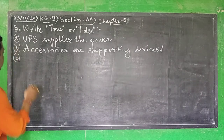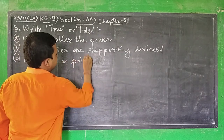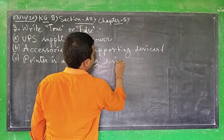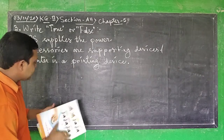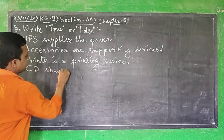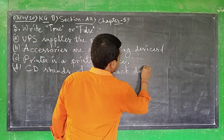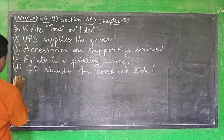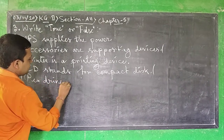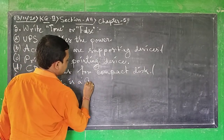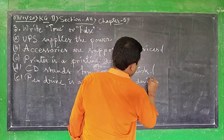Statement C: Printer is a printing device. Statement D: CD stands for compact disc. Statement E: Pen drive is a data storage device.